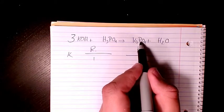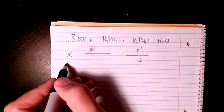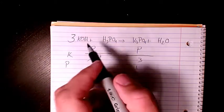What else? What about P? We have one here, one here, so it's balanced. P is balanced. This one is three.